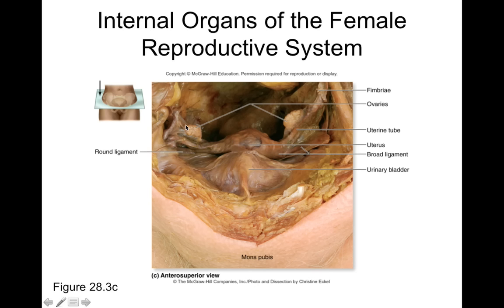If the fimbrae fail to pick up the ovulated egg, that egg can enter the pelvic area where it may be digested and reabsorbed by immune cells, or it could even be fertilized somewhere in the pelvic cavity — resulting in an ectopic pregnancy, where a fertilized egg implants in pelvic tissue and starts to grow into a fetus. However, the pelvic cavity is not a good place to support fetal growth, so it will grow a little but won't reach full term.